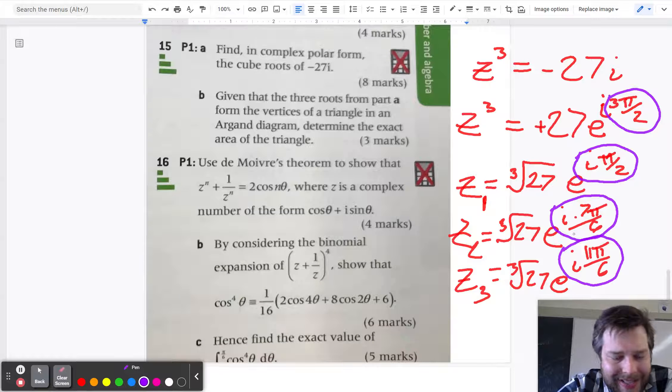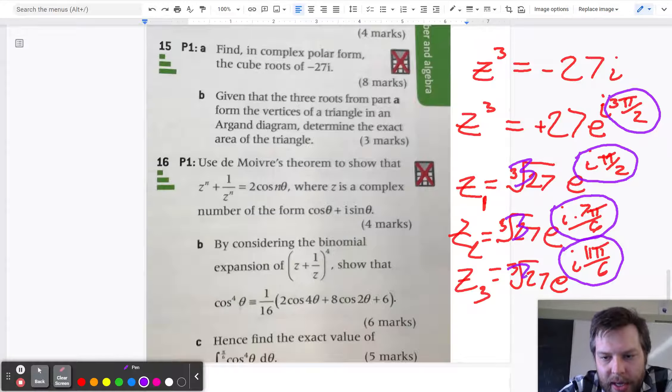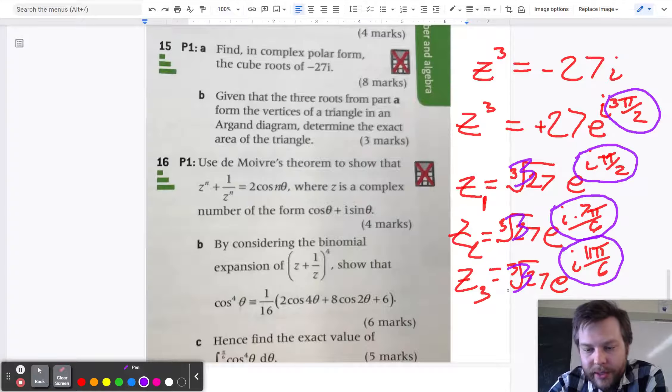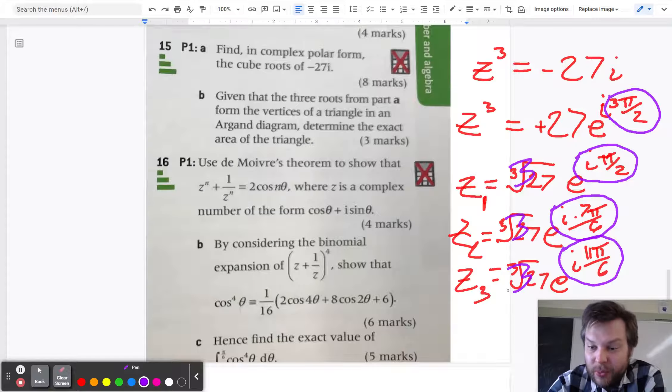So I guess I should have rewritten the cube root of 27 as 3. So I'm just going to kind of do that. And those give me my 3 different cube roots of negative 27i. So that's worth 8 marks on an IB exam. And really it's, in my opinion, pretty easy 8 marks.